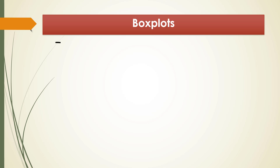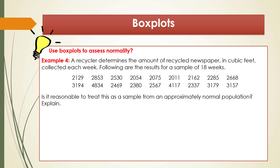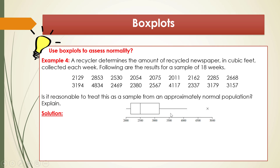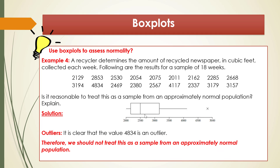Another example of using box plots to assess normality: A recycler determines the amount of recycled newspaper in cubic feet collected each week. The results are for a sample of 18 weeks. Is it reasonable to treat this as a sample from an approximately normal population? The first step is to construct the box plot. On the box plot, we can see there is one outlier — this number is around 4,834. We can also detect a strong skewness in this box plot. So there are two signs of non-normality.